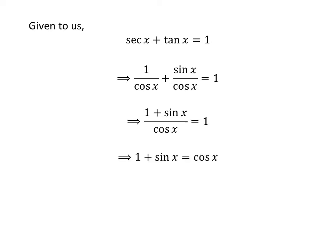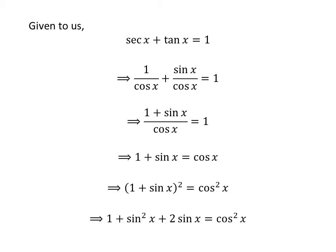Multiplying the whole equation by cosine of x gives us 1 plus sine of x is equal to cosine of x. Taking the square of both sides, we get the square of 1 plus sine of x is equal to the square of cosine of x. Expanding the square of 1 plus sine of x, we get 1 plus sine squared of x plus 2 times sine of x is equal to cosine squared of x.